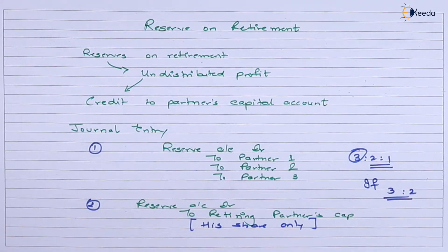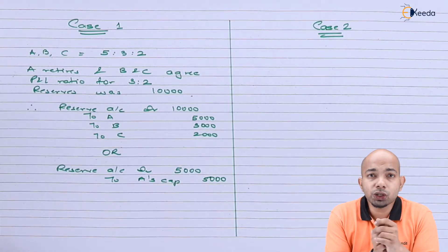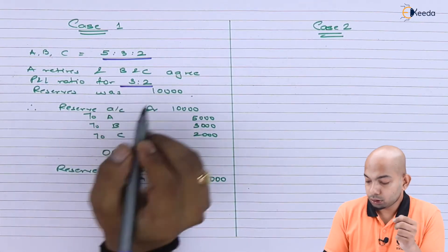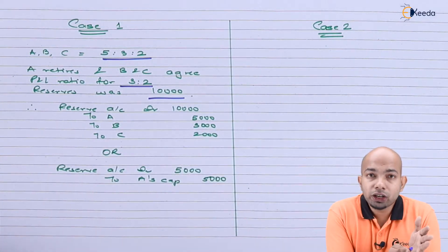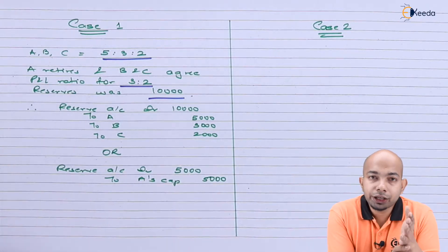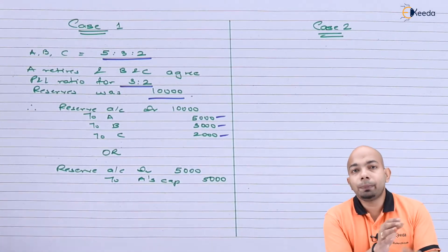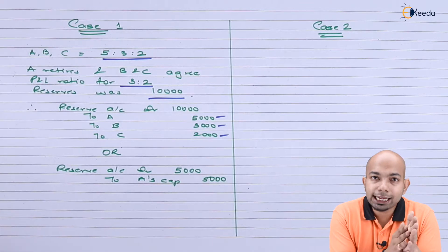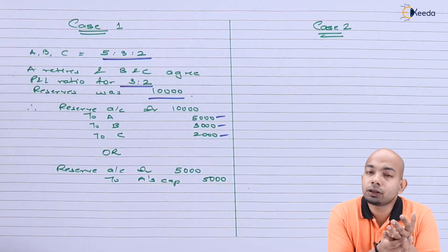Case 1: A, B, and C share profits and losses in the ratio of 5:3:2. A retires; B and C continue with the profit sharing ratio of 3:2. The reserve balance is 10,000. The journal entry is: reserves account debit 10,000 — to A's account 5,000, to B's account 3,000, to C's account 2,000, in the ratio 5:3:2. Alternatively, only A's share is recorded: reserves account debit 5,000 to A's capital account.